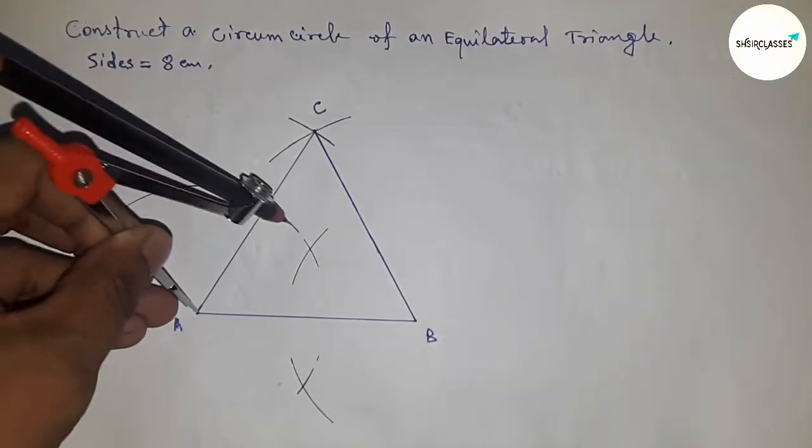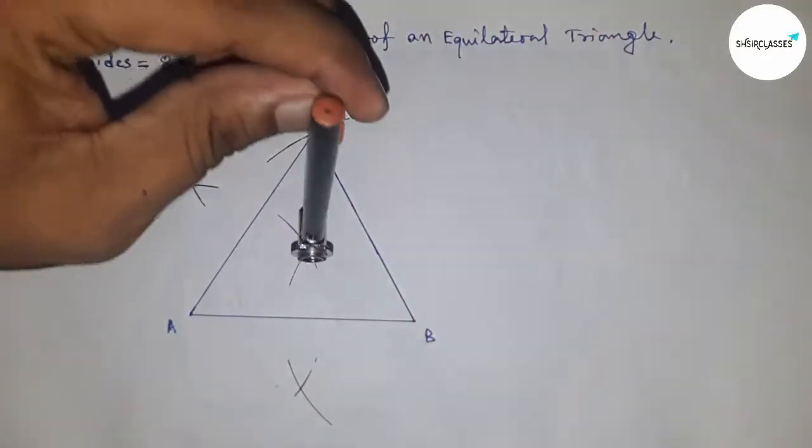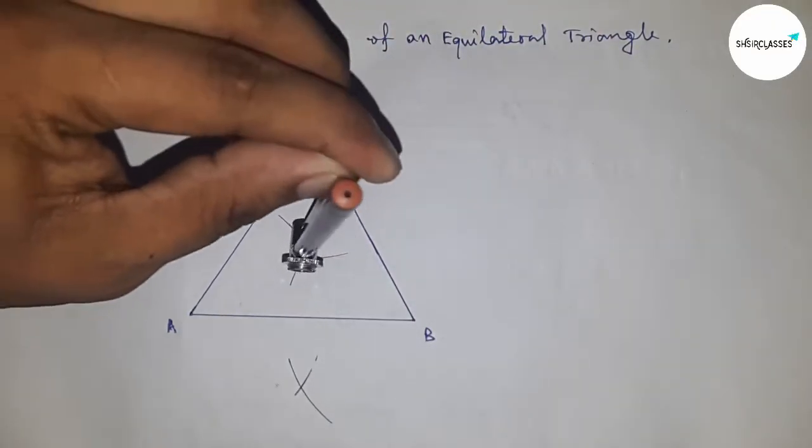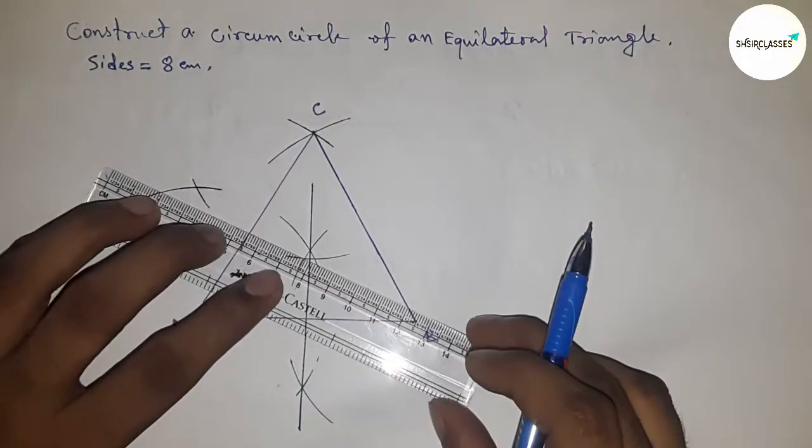the same distance of the compass, cutting the arc this way. Next, joining this and